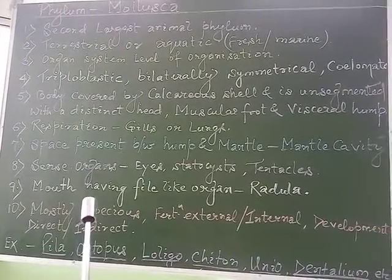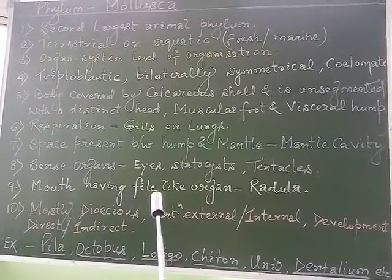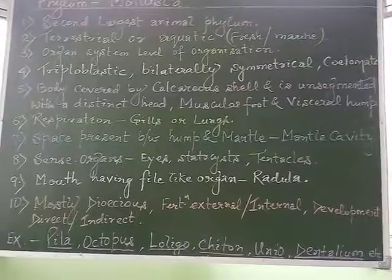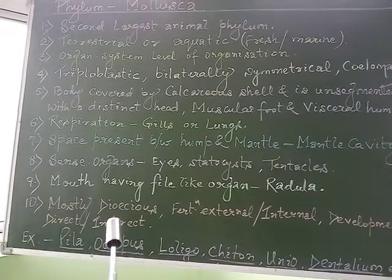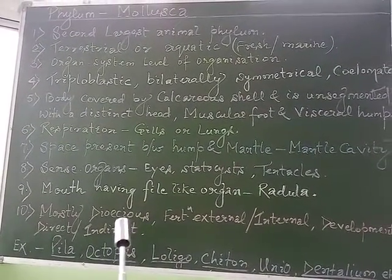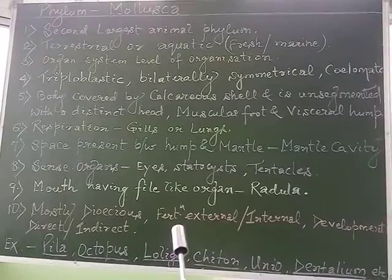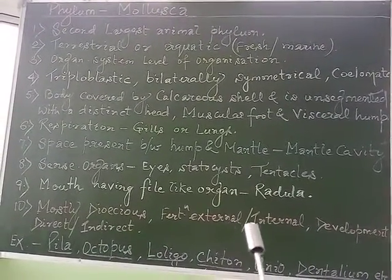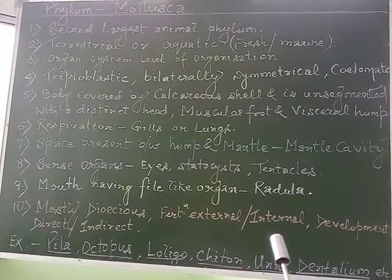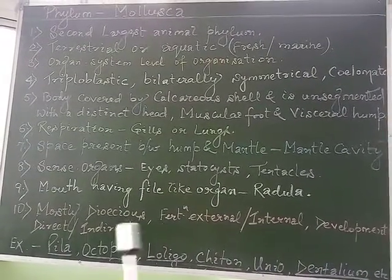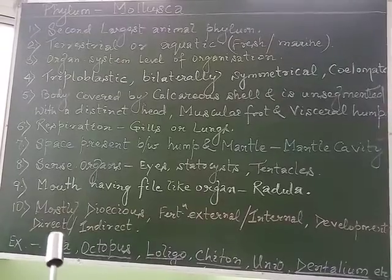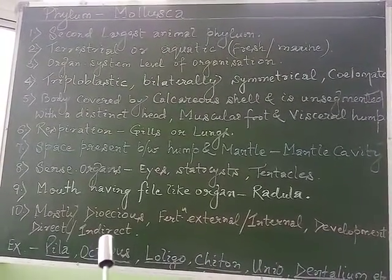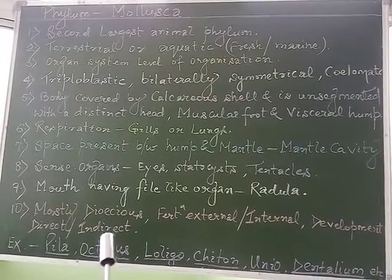The mouth has a special type of rasping organ called the radula. Most members are dioecious (unisexual); fertilization may be external or internal. Development may be direct, without a larval stage, or indirect, with involvement of larval stages.